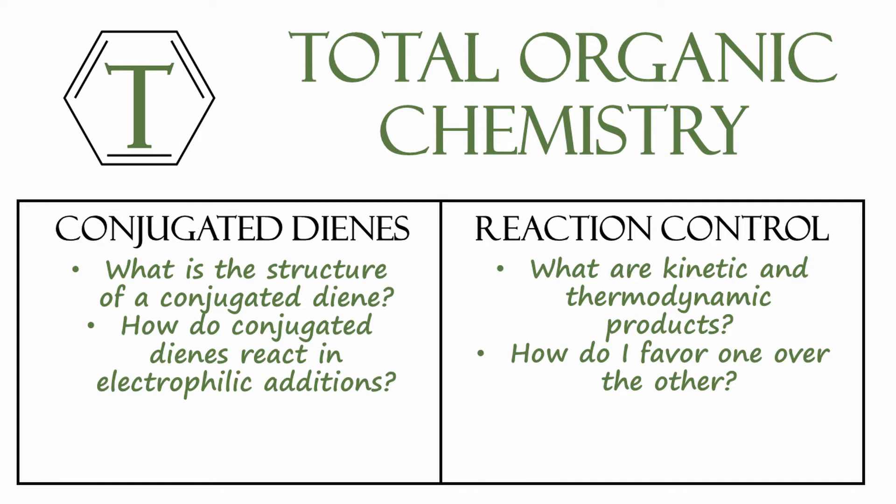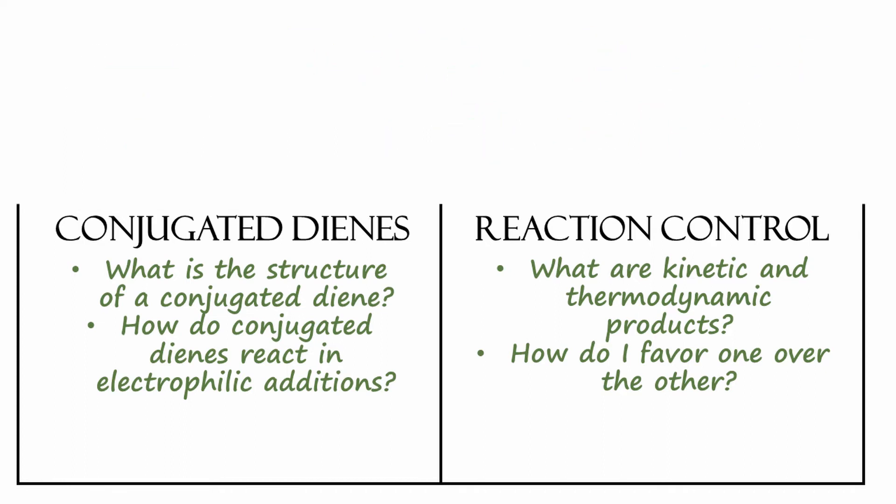If you'd like some review on the reactions of regular alkenes, or an introduction to delocalized pi systems, please go ahead and subscribe to my channel and take a look at those videos before you continue on. Let's start this video with the simplest conjugated diene, called 1,3-butadiene.